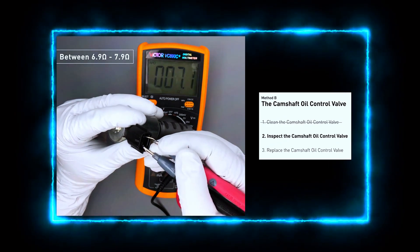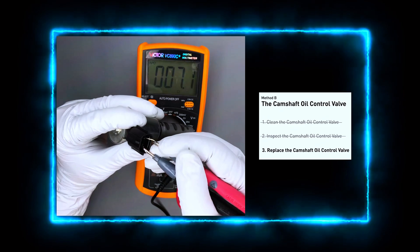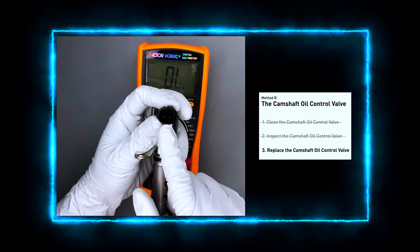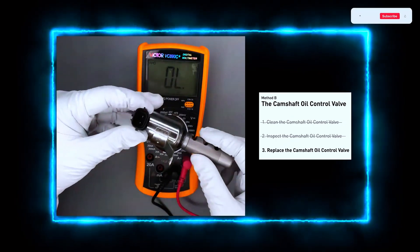If your inspection or testing revealed that the valve is faulty, now's the time to replace it. Simply install the new camshaft oil control valve in the same spot as the old one, following the same steps for securing the bolts and reconnecting the harness.